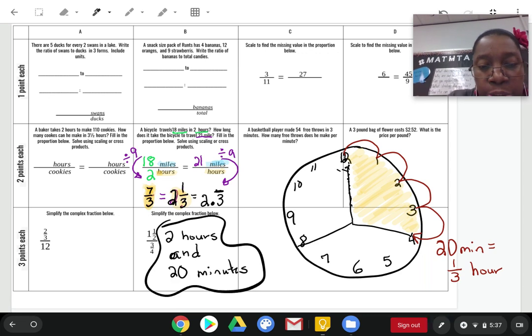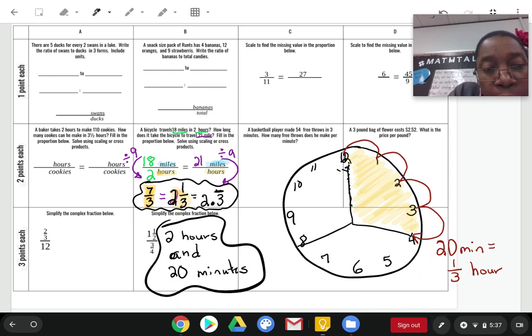So, any of these answers, 7 thirds, 2 and a third, or 2.3 bar would be correct. Right. Let's clear our page and go to the next one.